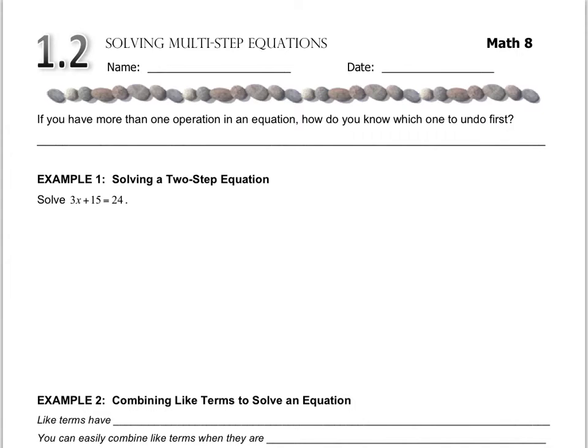We might have to combine some like terms. We might have to use the distributive property, so there's a lot more things going on in these equations. When you have more than one operation to remove, the way that you know which one to undo first is by doing your order of operations backwards.